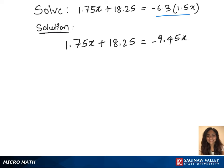Now, add 9.45x and subtract 18.25 on both sides. That will give us 1.75x plus 9.45x equals minus 18.25.